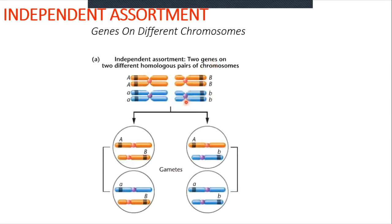Let's start from the beginning with an example. If two genes are on separate chromosomes, we hypothesize an organism with two chromosomes. Since this is a diploid organism, our individual has two copies of each chromosome: one copy of chromosome one, a second copy of chromosome one, one copy of chromosome two, and a second copy of chromosome two.